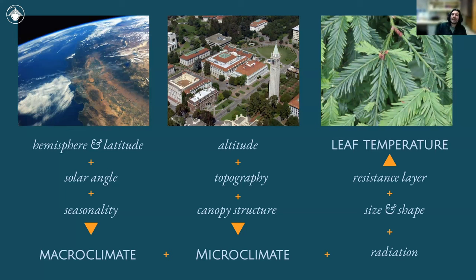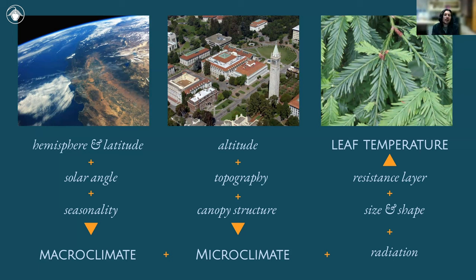Hemisphere and latitude influence our macroclimate — where we are with respect to the sun throughout the year, the angle of the earth, the season. At a closer scale, topography, buildings reflecting sunlight or casting shadow, canopy cover, hill slope, and altitude all inform a microclimate. But then we get to something that's almost a nanoclimate, which is the leaf itself — its angle, texture, size, and shape — all of which inform what we call leaf temperature.